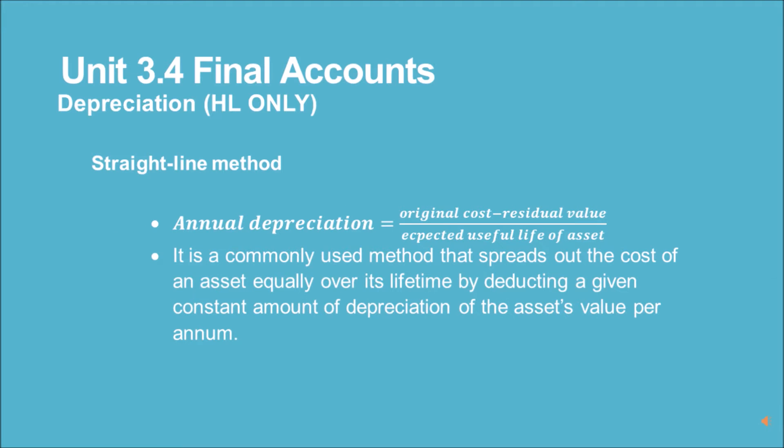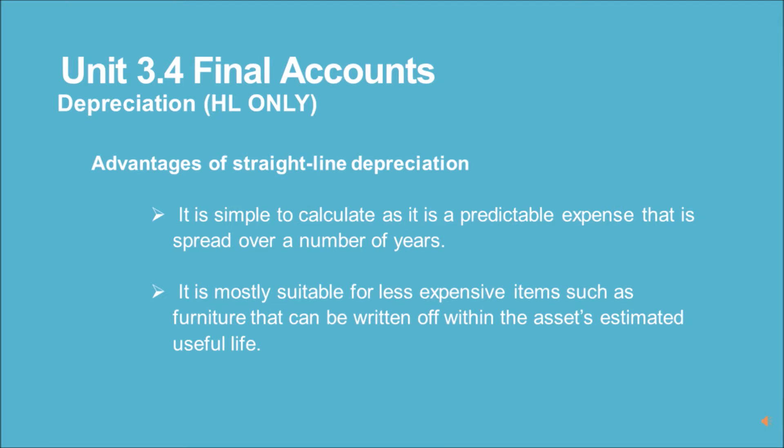There are two methods for calculating depreciation: the straight line method and the reducing balance method. Straight line method: Annual depreciation = (Original cost − Residual value) ÷ Expected useful life of asset. It is a commonly used method that spreads out the cost of an asset equally over its lifetime by deducting a given constant amount of depreciation per annum.